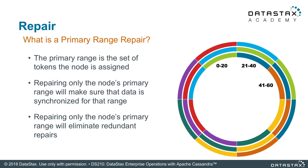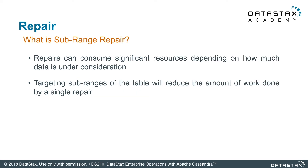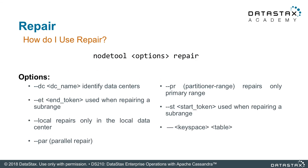What is a primary range repair? As you can see in this diagram, each node has a range of data that is its primary range — the token assigned to that node. A primary range repair repairs only that node's primary range against its replicas. You do this as you walk through every single node, which limits the amount of data being repaired at once. Sub-range repair lets you define a token range and repair only a small portion of it at a time. This is helpful for doing a little bit at a time or parallelizing the task, minimizing the load on each node.